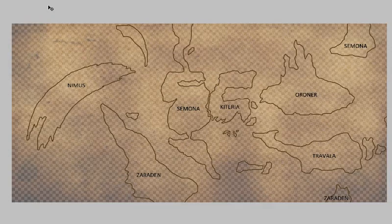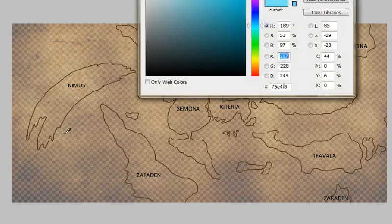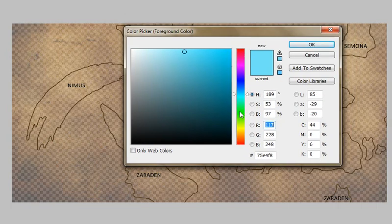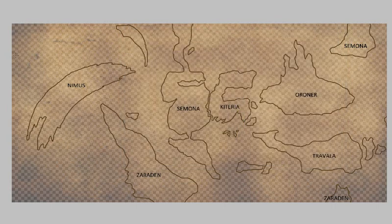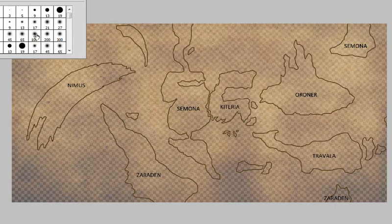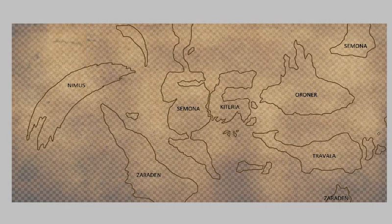A couple of things I want to do — first, I'll make a new layer here and call it 'currents.' So the currents themselves... what color do we want to make these? Let's make them a very fascinating blue, given that they're water. Make this a little bit bigger. So let's have a current that comes through here, and then let's go this way.